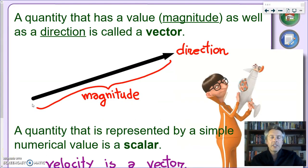Now, a quantity like velocity, which has a value, which we will call magnitude, as well as direction, is part of a bigger family of physical quantities that we call vectors. So, velocity is our first example of a vector, a physical quantity represented by a magnitude as well as a direction.